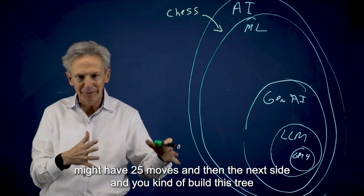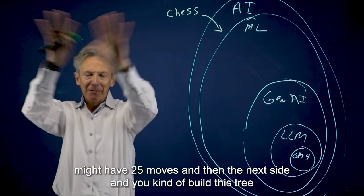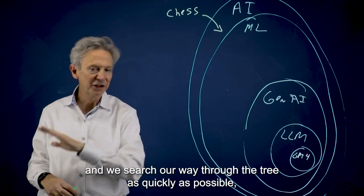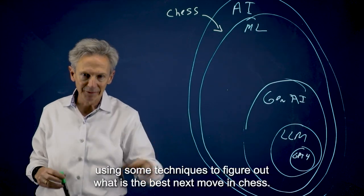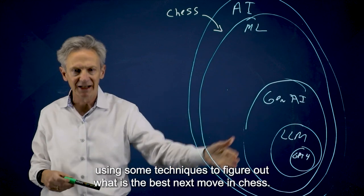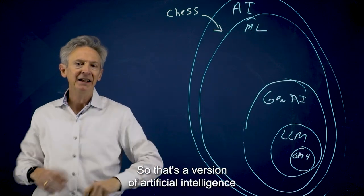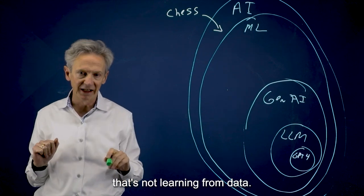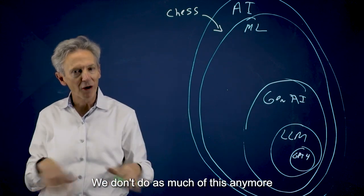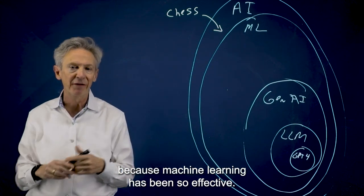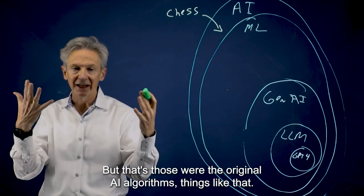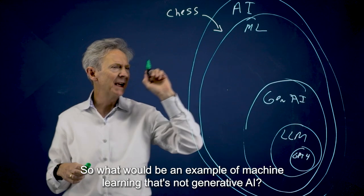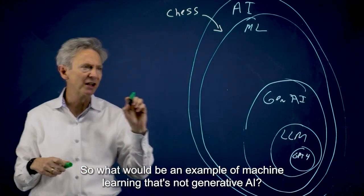And then the white side, depending on the first move, might have 25 moves. And you kind of build this tree. And we search our way through the tree as quickly as possible using some techniques to figure out what is the best next move in chess. So that's a version of artificial intelligence that's not learning from data. We don't do as much of this anymore because machine learning has been so effective. But those were the original AI algorithms.